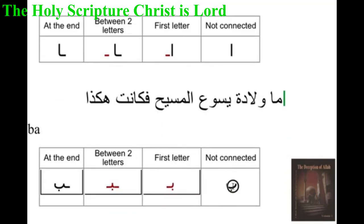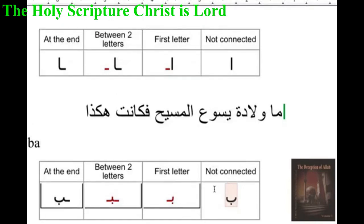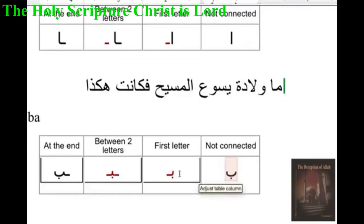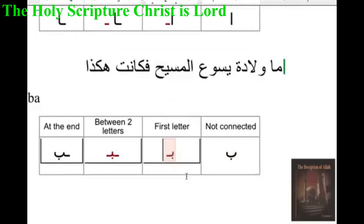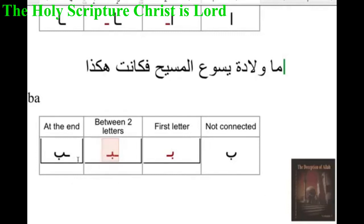So this is Ba as we see here. This is how it is written at the beginning of the word — you see the letter how it is at the beginning. This is how it is in the middle, which means between two letters — you can connect from the right, you can connect from the left, you see the line there. And this is how it is at the end. I will connect my tablet — the reason I'm not connecting it right away is that for some reason this tablet crashes my computer if I connect it for a while.